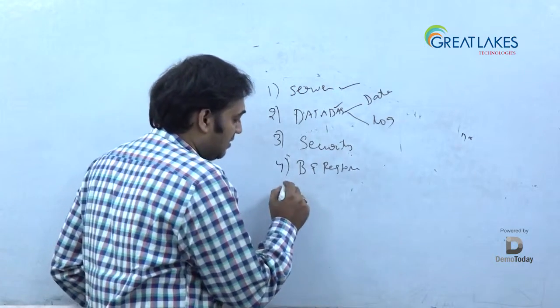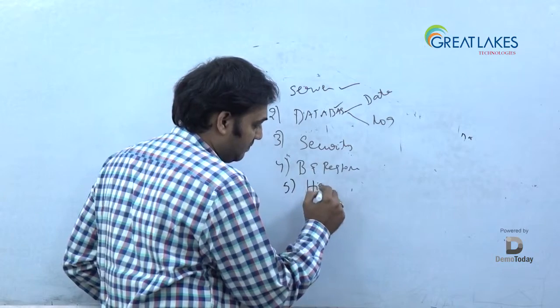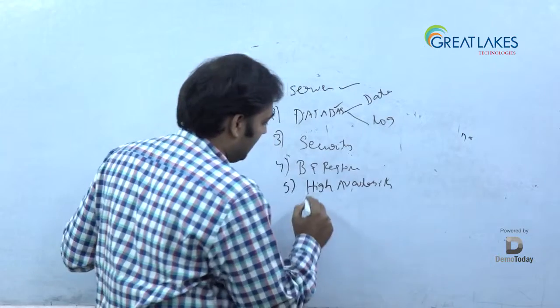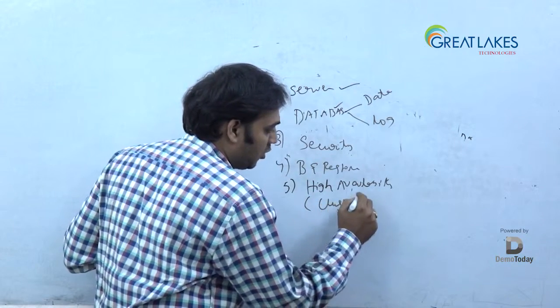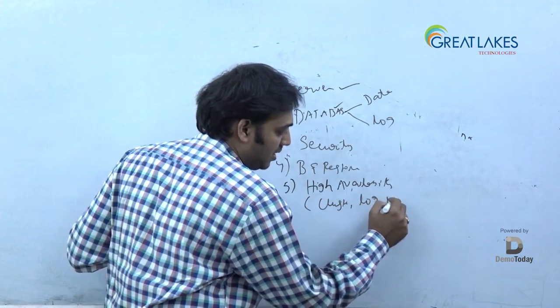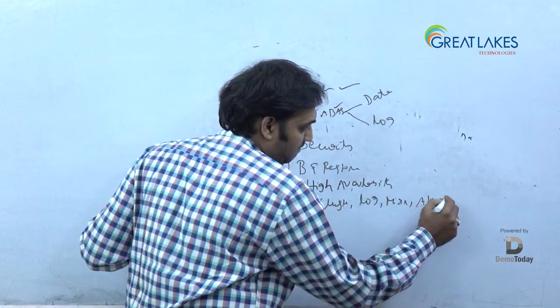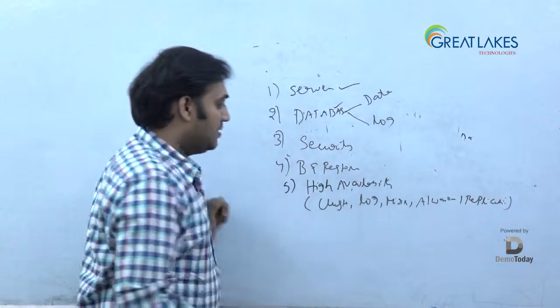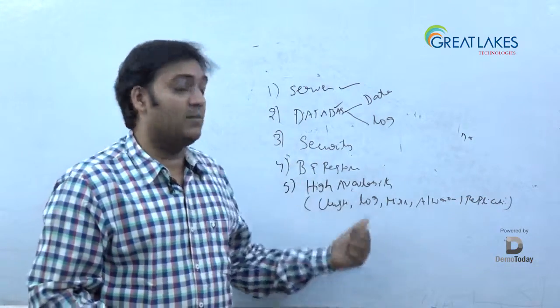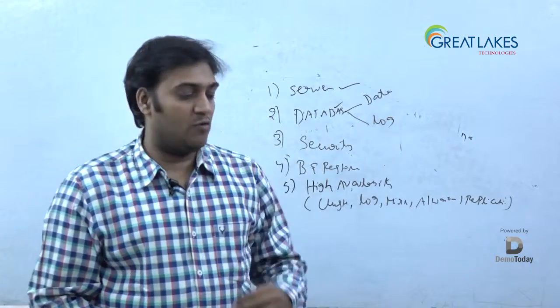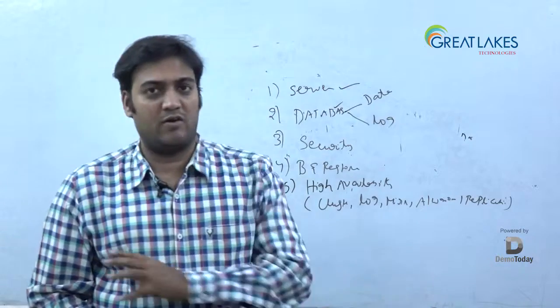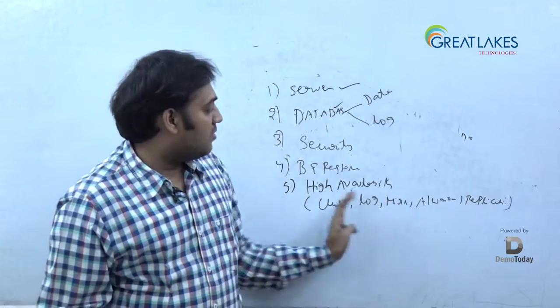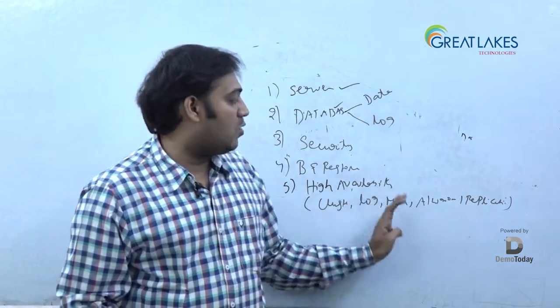And fifth thing, the most important thing is high availability. Here there will be a lot of options. Like we talk about clustering here, we talk about log shipping here, we talk about mirroring here, we talk about always on here, and we talk about replication here. What do you mean high availability? The name itself says high availability. That means your database should be available all the time. With respect to whatever happens to the server, your database should be available. So for that we have different options in SQL Server where you can make sure that your database is available always.